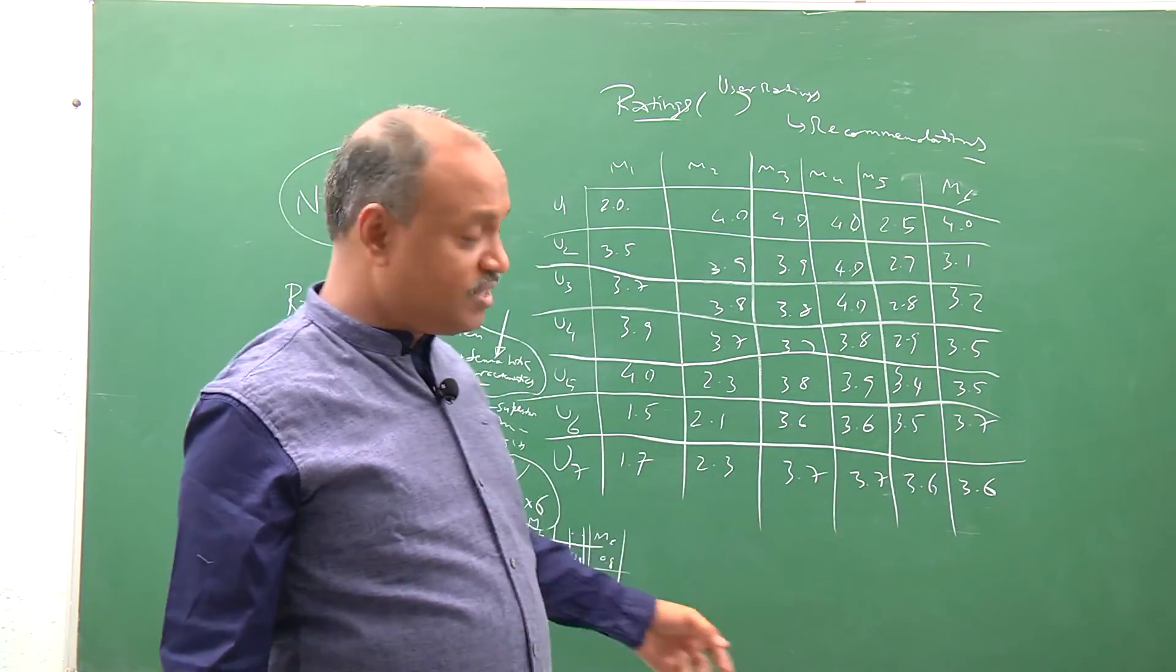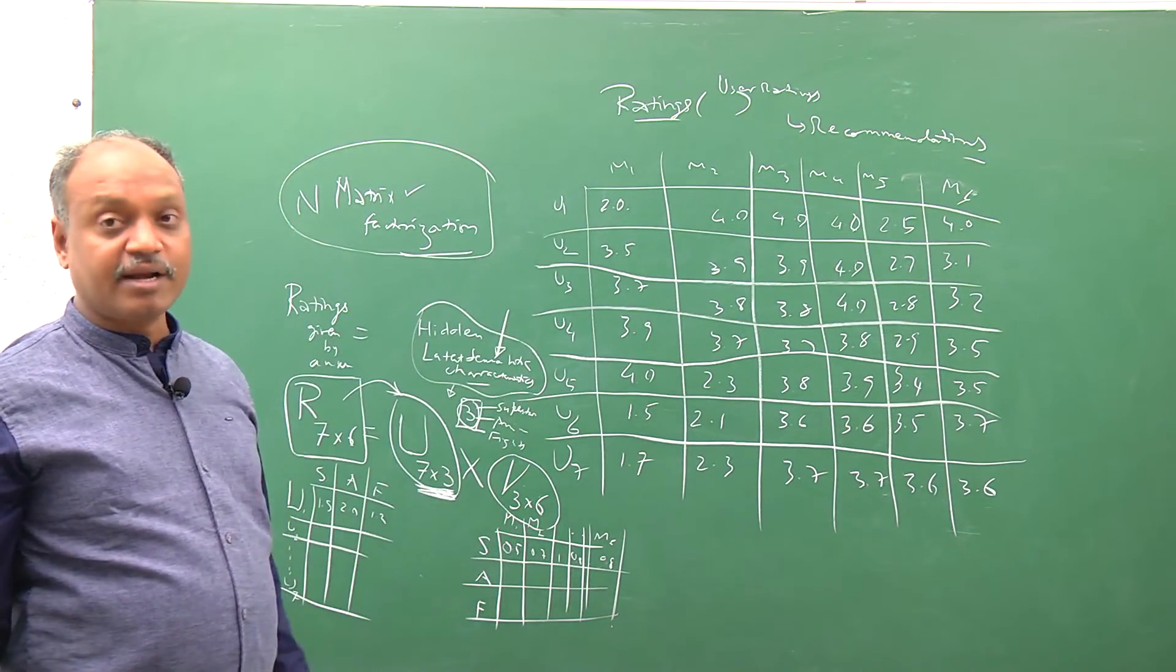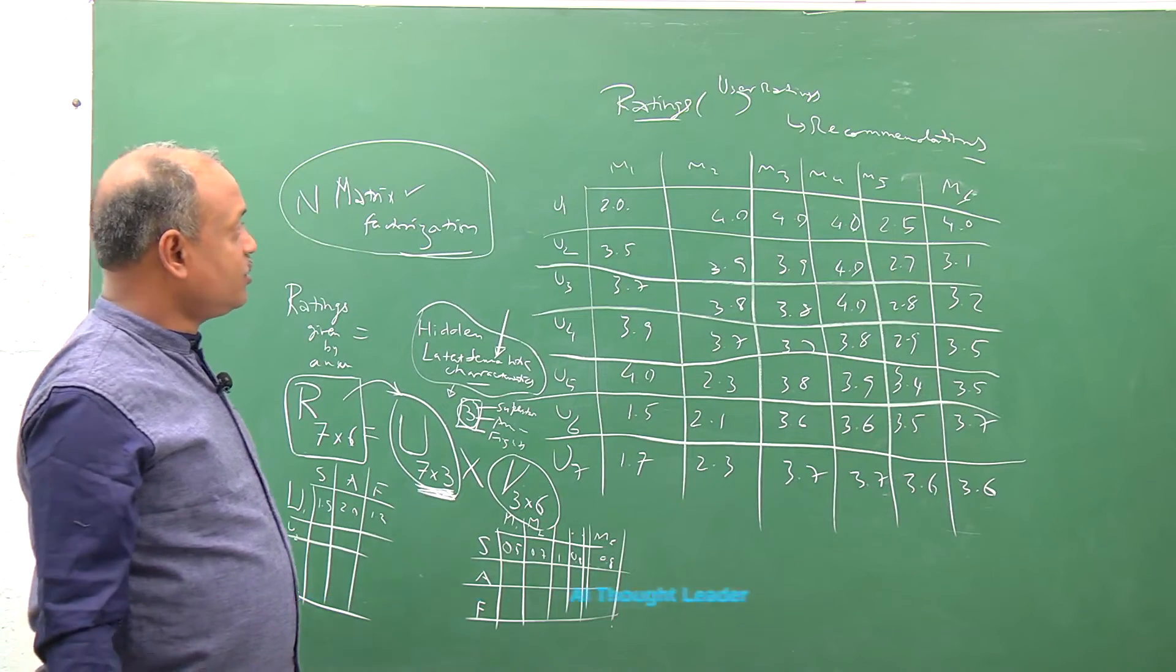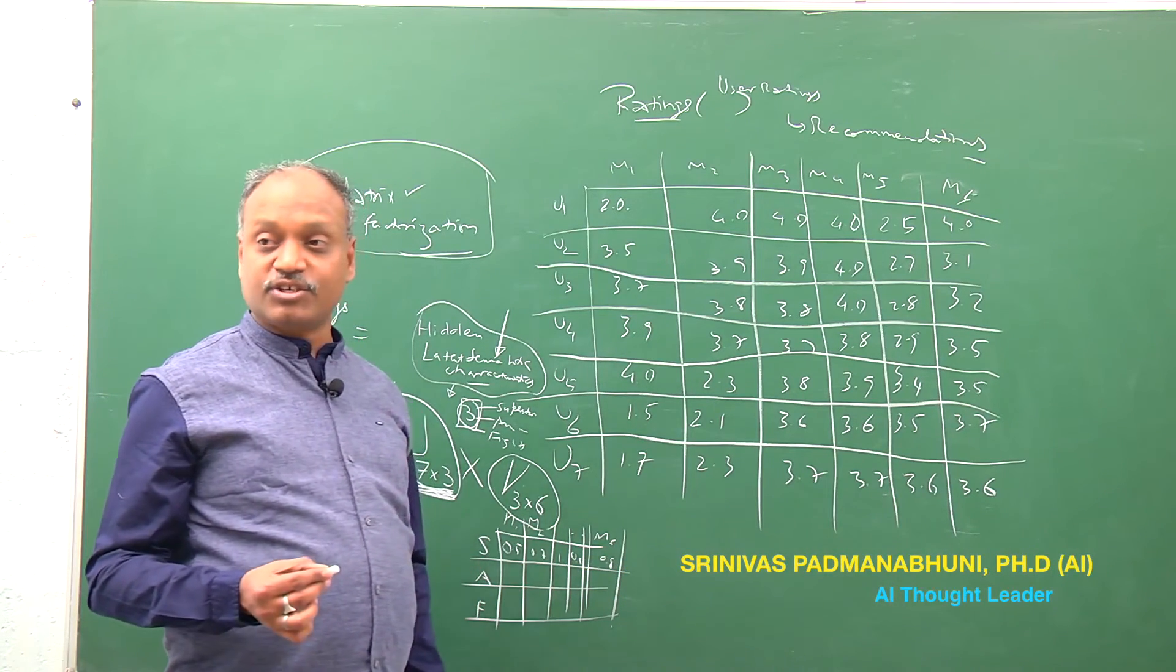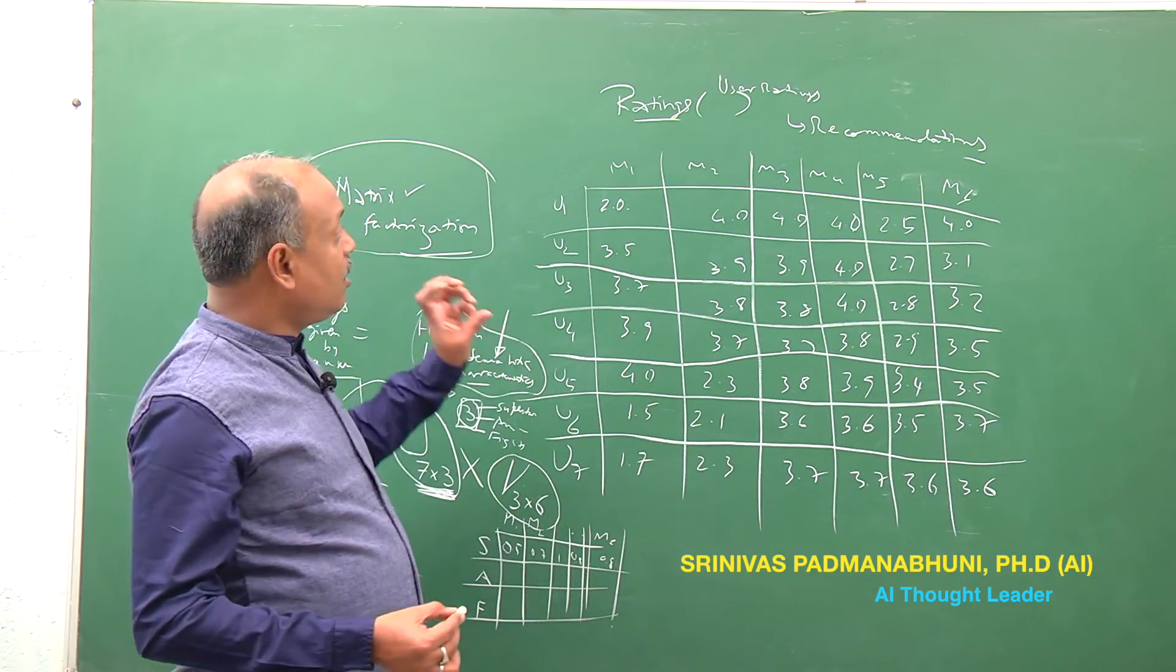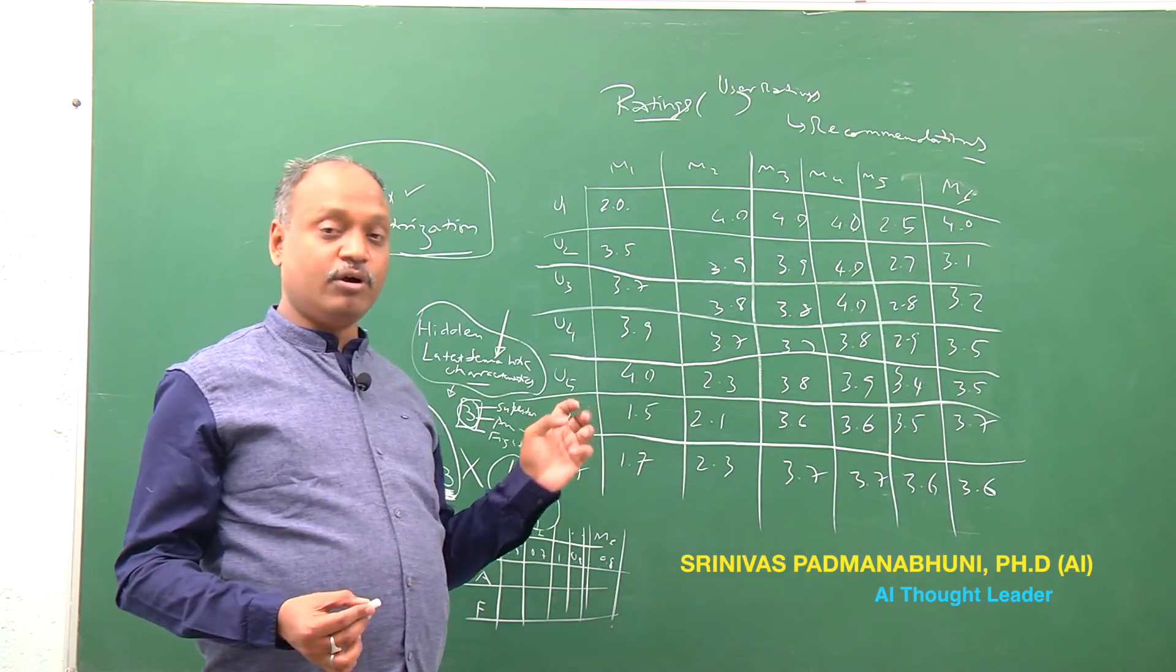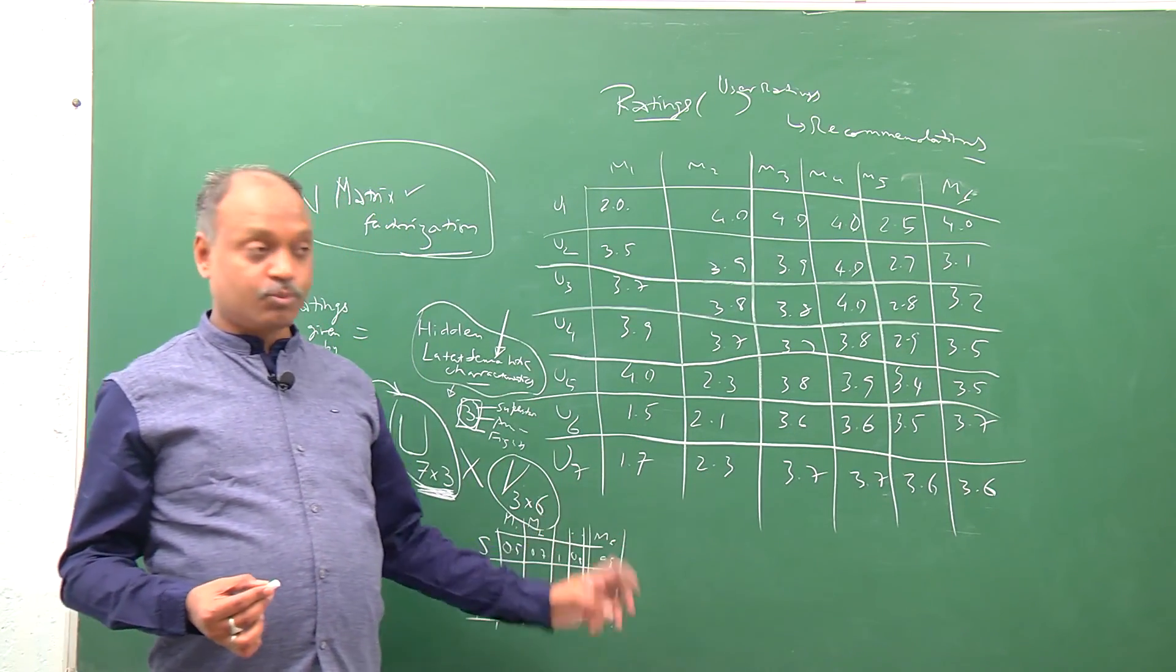All of this can be done by using the derived matrices which have been responsible for the data given. So you see that this is a very powerful technique for recommendation systems, for extracting latent hidden semantic factors from corresponding ratings, which is a very important input for recommendation systems and a very useful category of unsupervised learning.